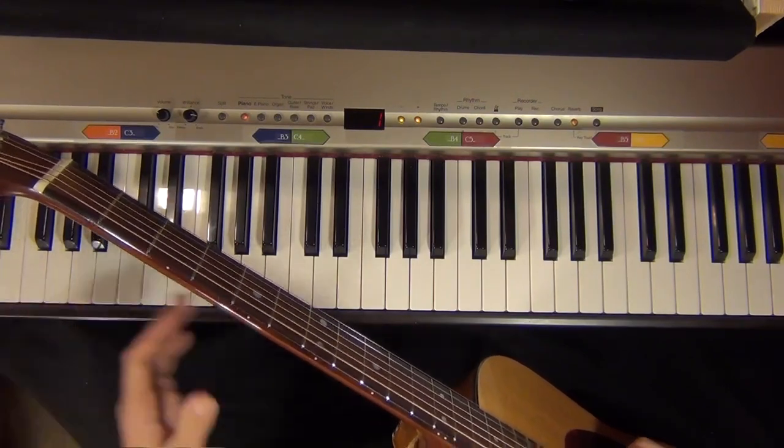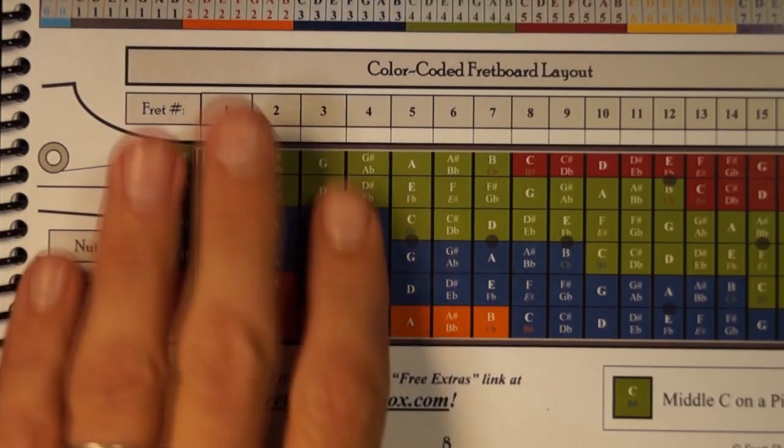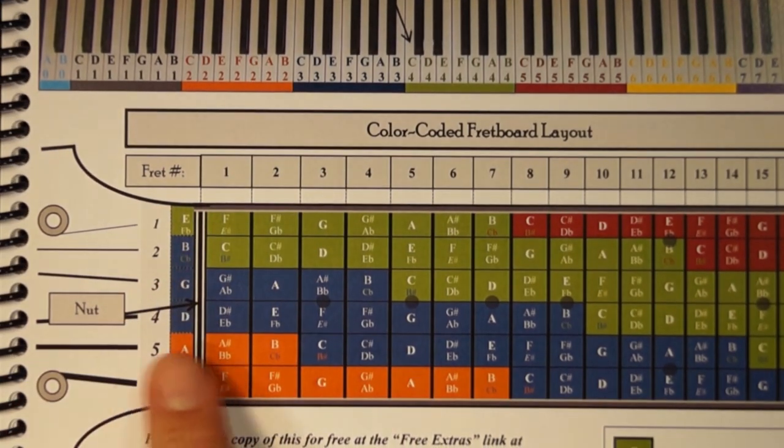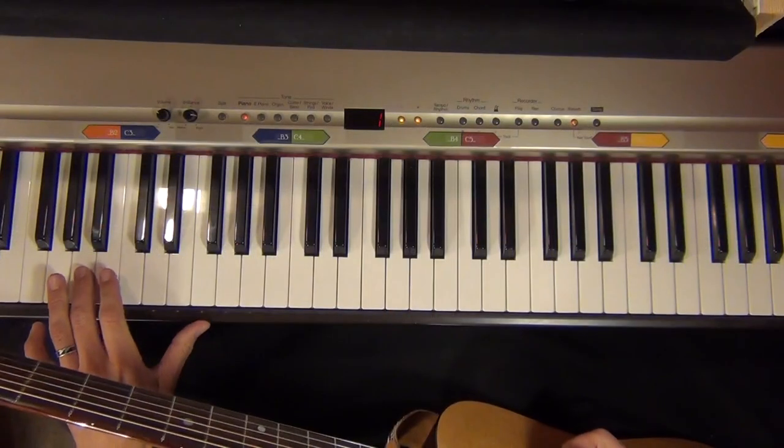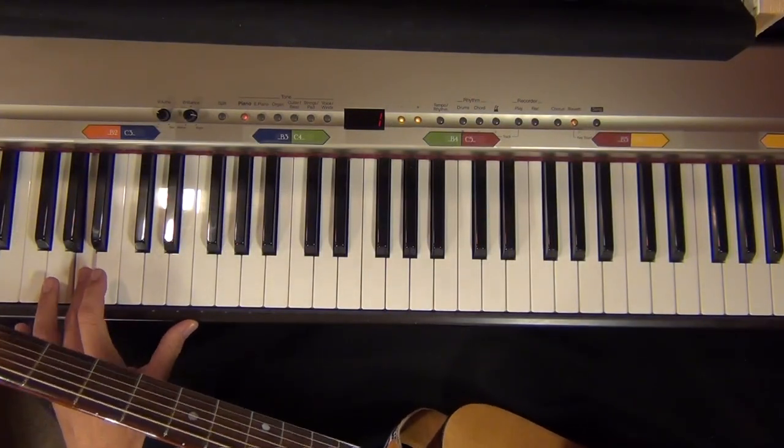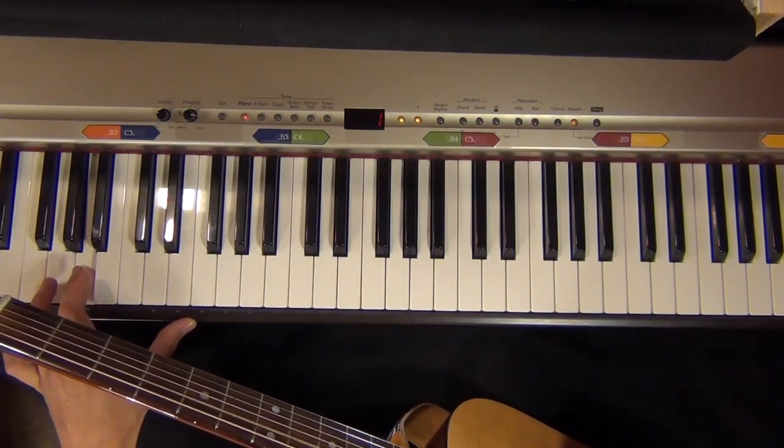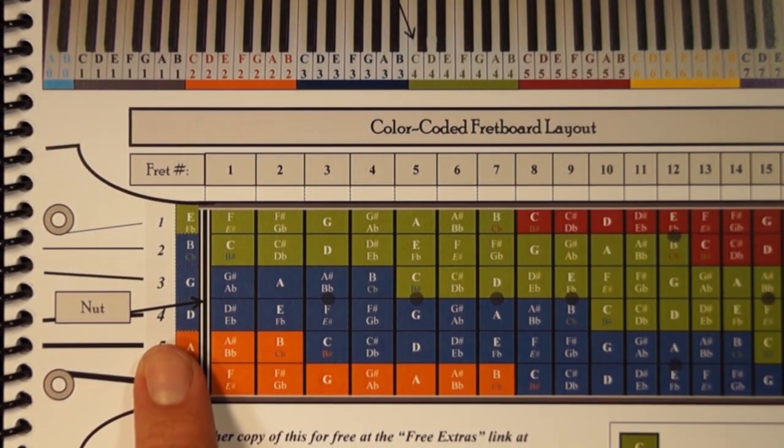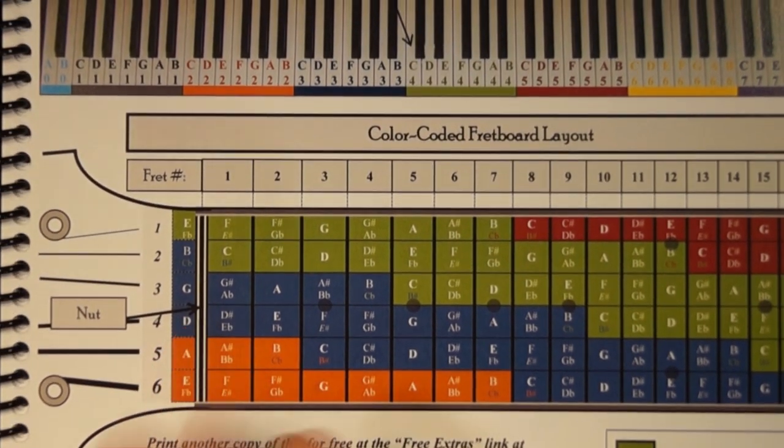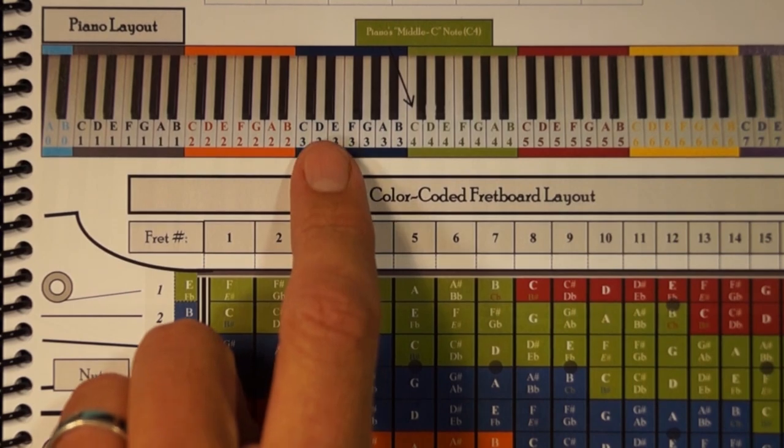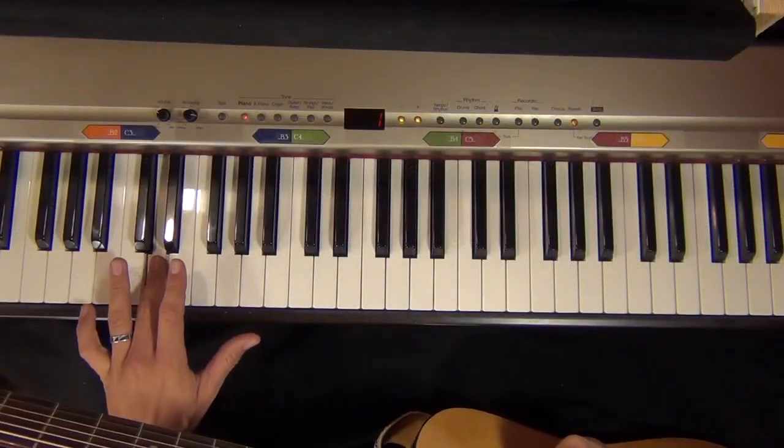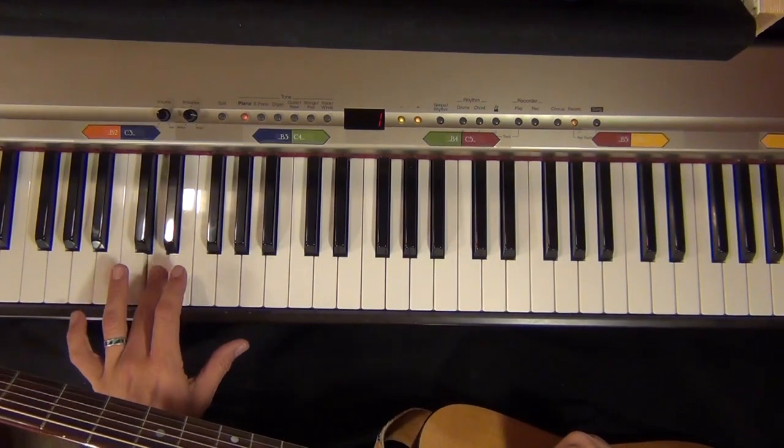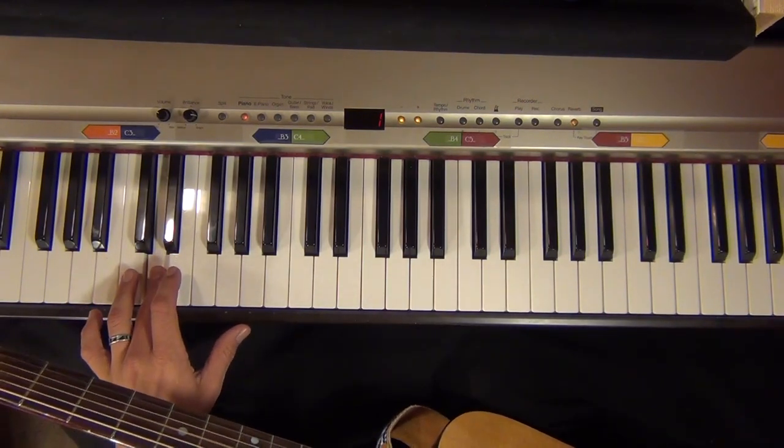Then the A note is the next one here. The fifth string open is an A, and that is A2, and A2 is the note right here. The fourth string is a D note and that's in the blue section here, D3. If I look on the piano here, this blue D right here is my D note from the fourth string.